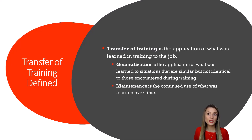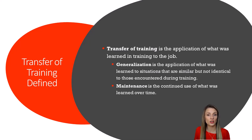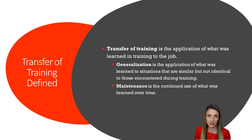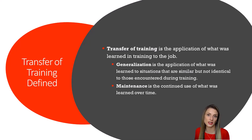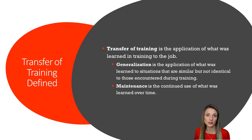It's a little bit easier to track learning because it usually happens within a training program. It's a little bit more difficult to evaluate transfer because it doesn't always happen in the training context. We have to collect information from employees' work environment, like performance data, in order to understand whether transfer of training occurred and to what extent.